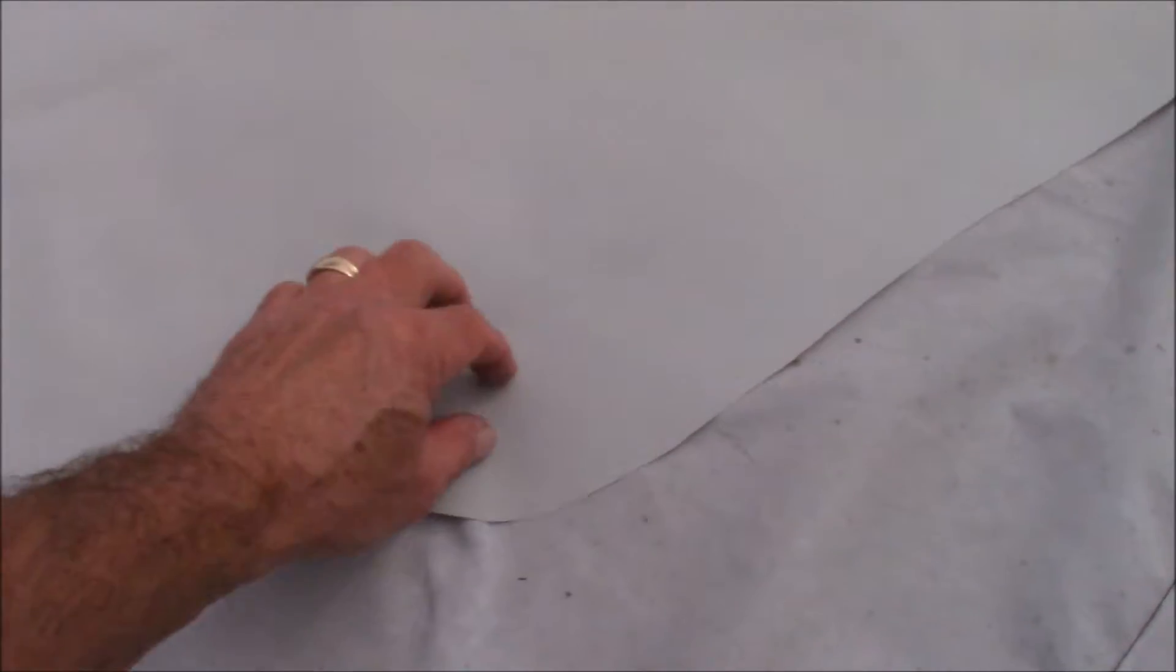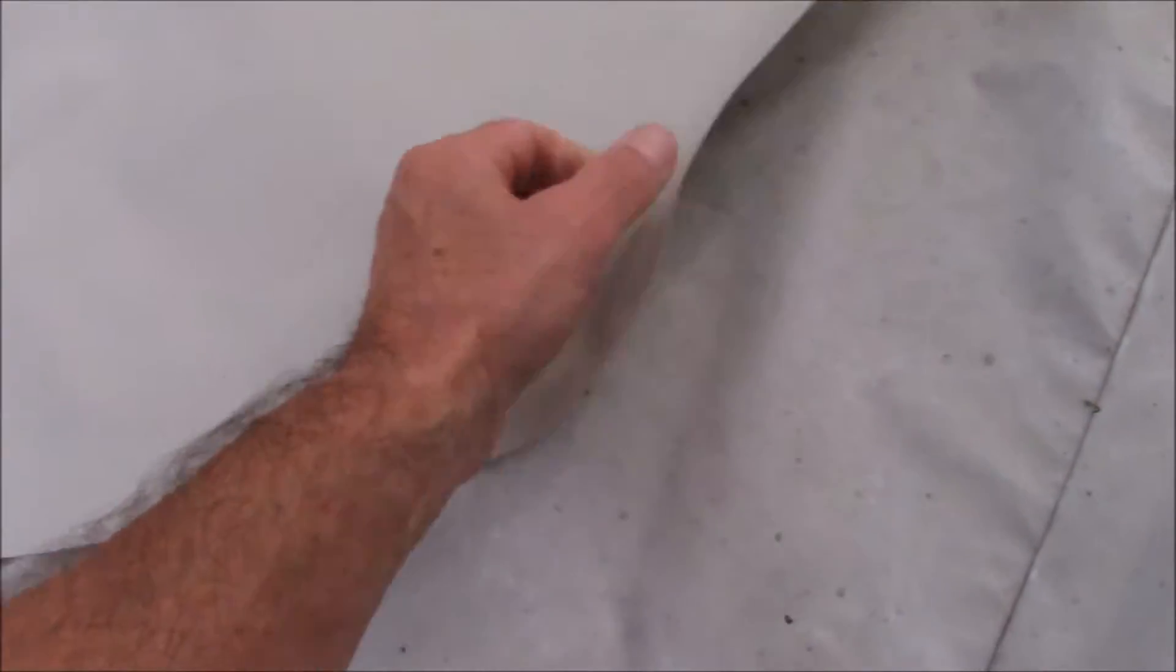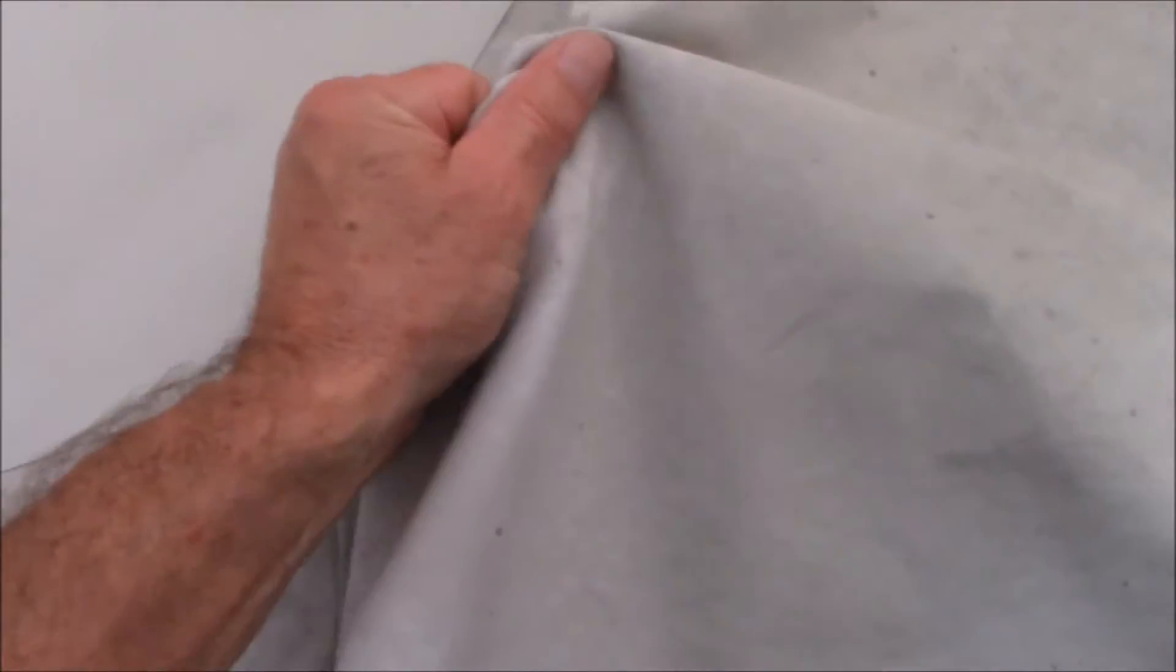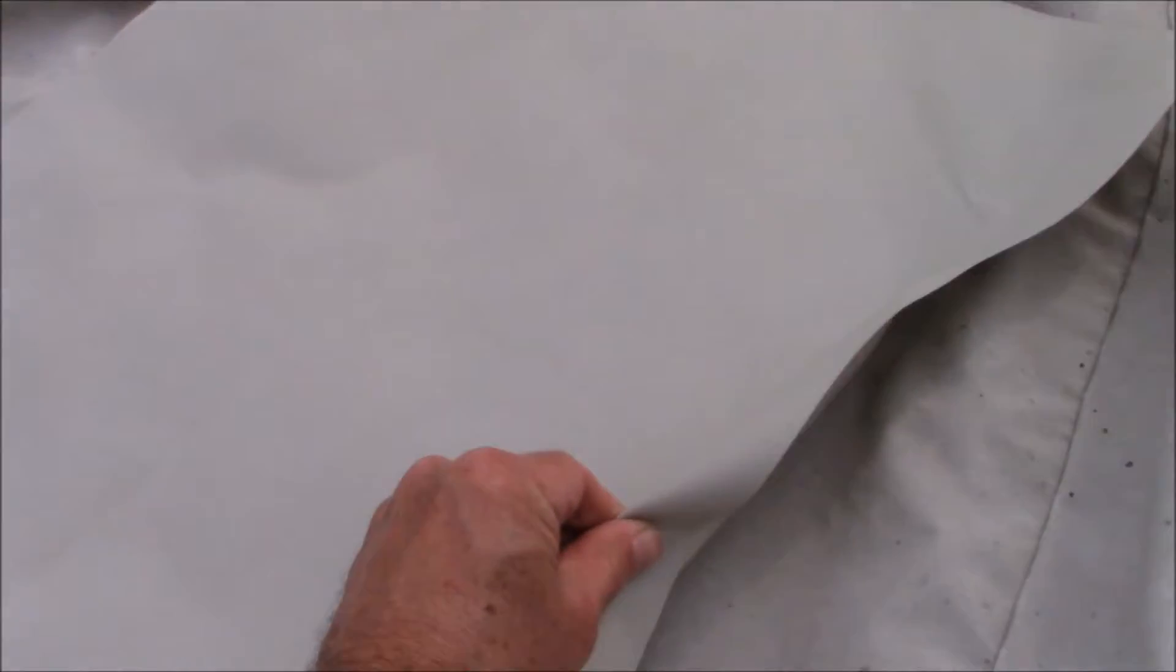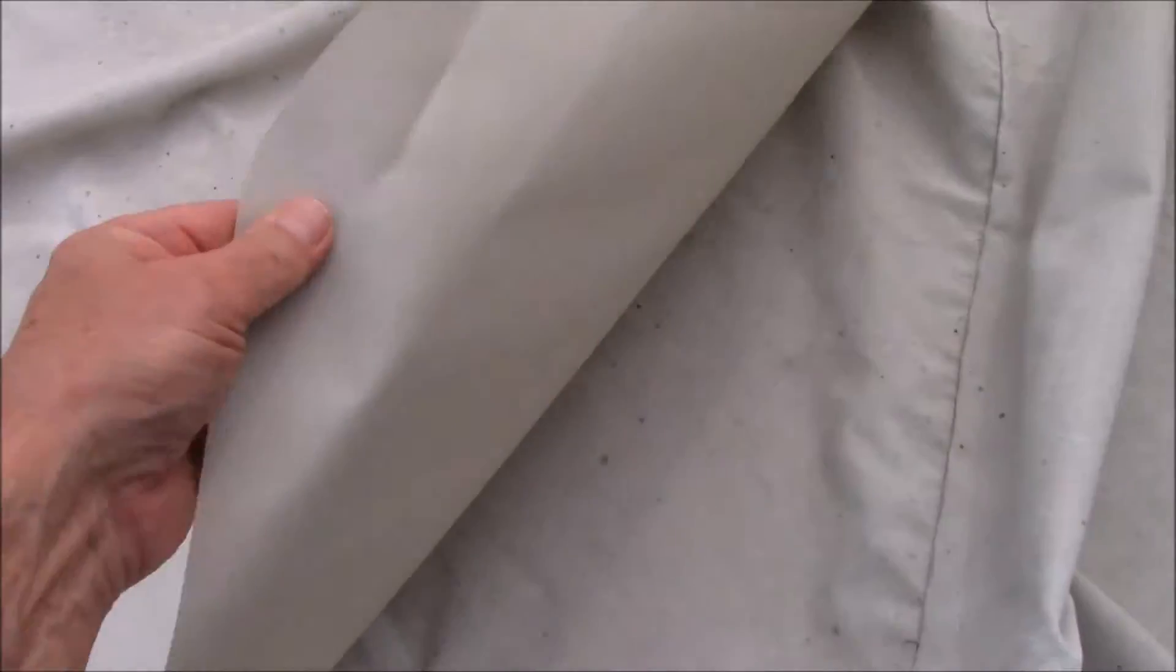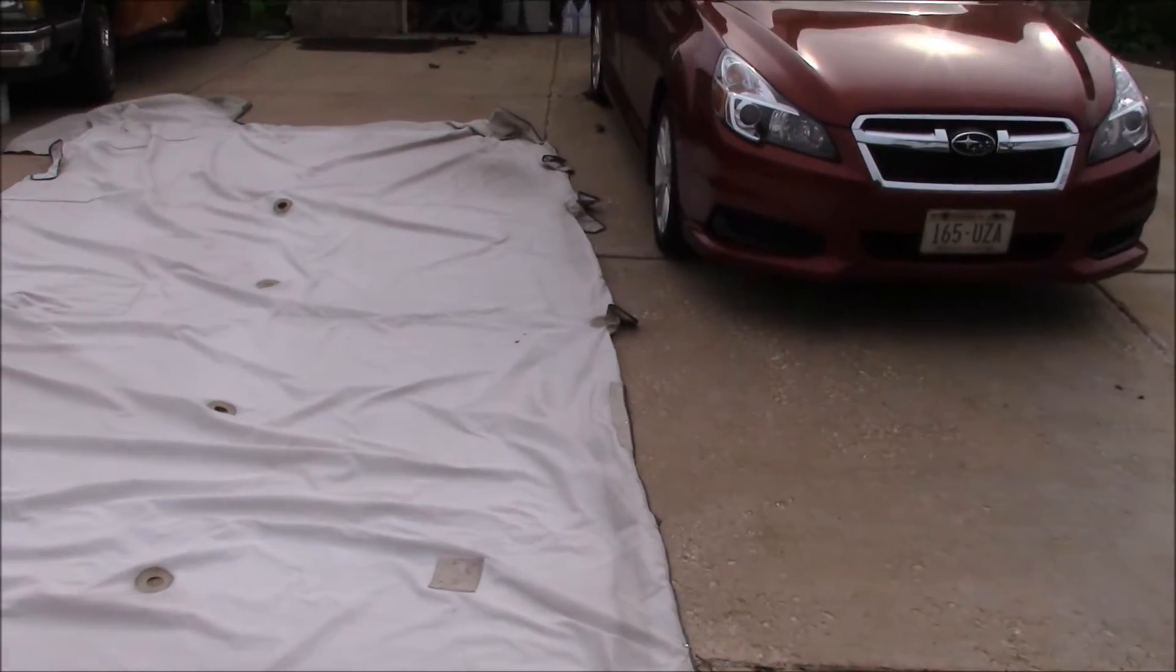This is called Top Gun vinyl. This is not cloth, this is vinyl. You can wrinkle this up, but this you can't wrinkle up as much - it's much more durable. We're just about done putting the black trim that goes all the way around the new cover right now.